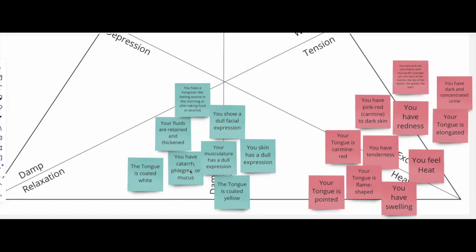That's why you have catarrh, phlegm, or mucus accumulating. That's why your body fluids are retained and thickened, and then you have a feeling of hangover when you wake up, when you have alcohol, when you have food, because your liver is overwhelmed by the amount of toxins accumulating because of the pooling.